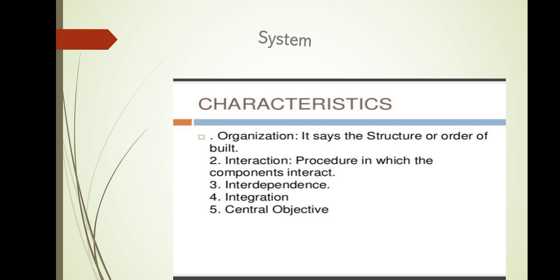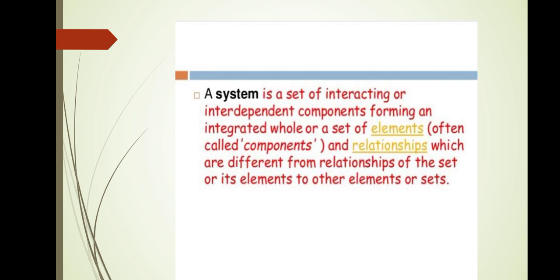What are the characteristics of a system? First, organization — the structure or order of build. Second, interaction — the procedure by which the components interact. Third, interdependence — each component of a system depends on others. Fourth, integration — without integration they cannot achieve the objective. Fifth, central objective — all the components work together to attain a common goal.